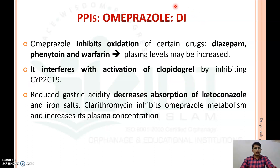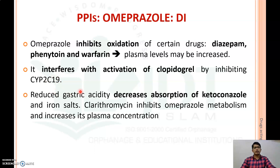Now coming to the important drug interactions of omeprazole: it will inhibit the oxidation of certain drugs like diazepam, phenytoin, and warfarin, thereby increasing their plasma concentration. It will also interfere with the activation of clopidogrel by inhibiting the enzyme CYP2C19, a cytochrome P450 enzyme. Additionally, reduced gastric acidity will decrease the absorption of ketoconazole and other similar salts.